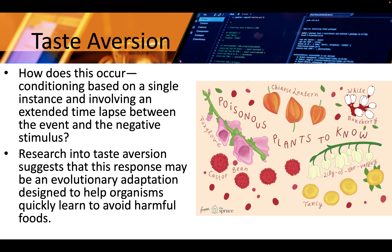How does taste aversion occur — conditioning based on a single instance and involving an extended time lapse between the event and the negative stimulus? Research into taste aversion suggests that this response may be an evolutionary adaptation designed to help organisms quickly learn to avoid harmful foods.